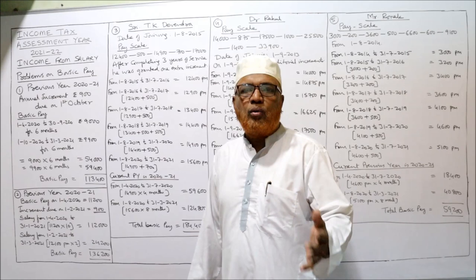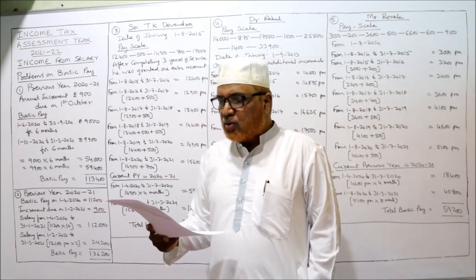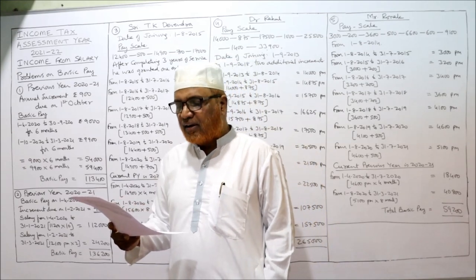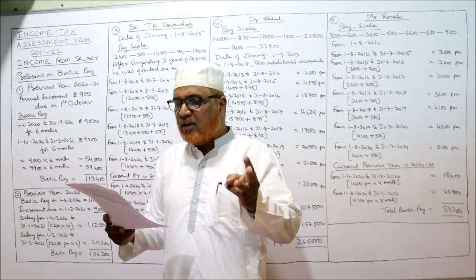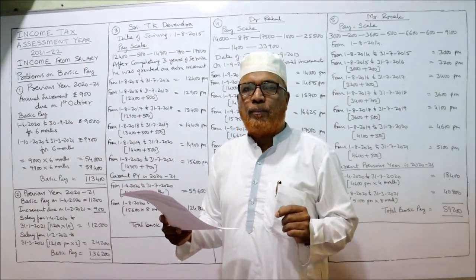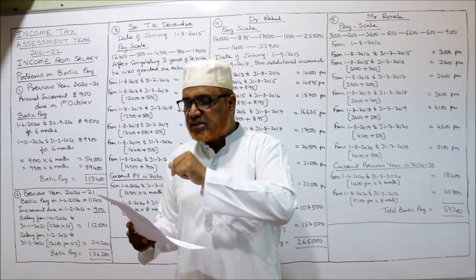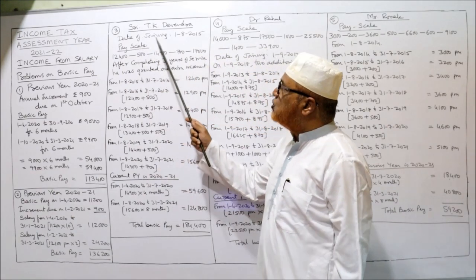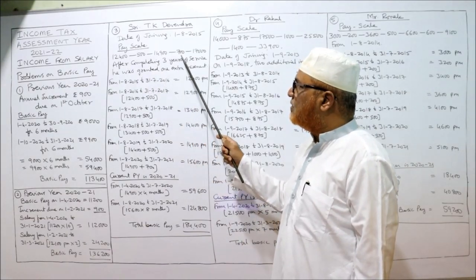By doing these calculations you will be perfect in how to calculate the basic pay. Now the third problem: Sri TK Devendra joined as an Accounts Officer in a limited company on 1st August 2015 in the scale of 12,400 – 500 – 14,900 – 700 – 17,000. This is a graded pay scale. After completing three years of service, he was granted one extra increment. Calculate the total basic pay for previous year 2021.